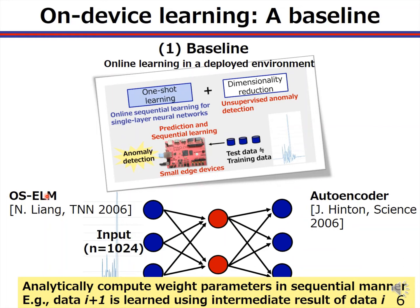More specifically, OSELM enables one-shot learning. In a typical training phase of neural networks, weight parameters are iteratively optimized with backpropagation and stochastic gradient methods. But ELM variants employ one-shot learning that analytically computes the weight parameters, not iterative tuning. And OSELM is a sequential version of ELM variants — that is, data i+1 is learned using the intermediate training result of data i for the online sequential learning. It is combined with the autoencoder, a dimensionality reduction algorithm of neural networks, so that we can realize on-device learning for unsupervised anomaly detection.